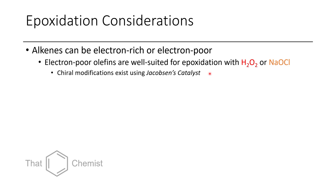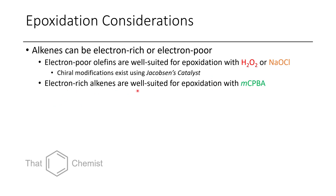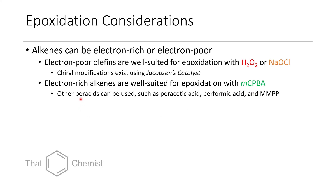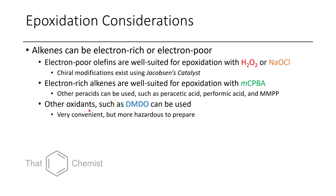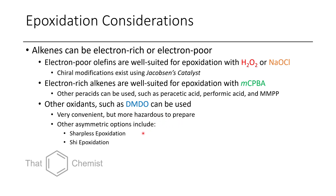You can also use different conditions to selectively get cis or trans epoxides if both are possibly formed. If you have electron-rich alkenes, they are typically well-suited for oxidations with MCPBA. Other peracids you can use include peracetic acid, performic acid, and magnesium monoperphthalate. You could also use DMDO, which is derived from acetone — it's a very convenient oxidant, but typically hazardous to prepare and very unstable. For asymmetric options, Sharpless epoxidation and Shi epoxidations are additional methodologies, but as this is an introductory course, we won't go into those today.